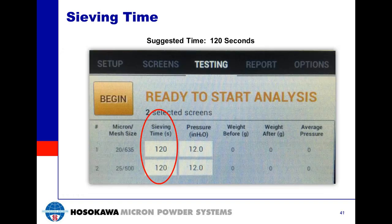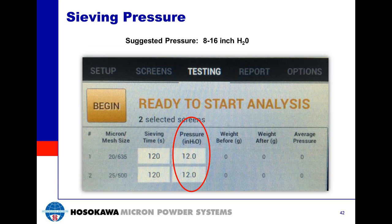For sieving time, we suggest 120 seconds or two minutes per test sieve screen analysis. Longer sieving time can improve the recovery of a given particle size distribution; however, excess sieving can lead to particle degradation due to attrition, especially for particles near the tail end of the distribution. The recommended sieving pressure is anywhere between 8 to 16 inches of water. For friable materials, consider running at a lower sieving pressure or shorter sieving time to cause less attrition. Using the same sample size, sieving time, and sieving pressure for each analysis will yield comparable results.